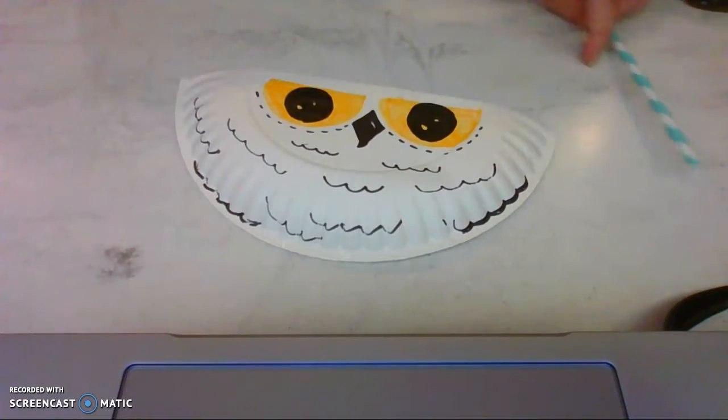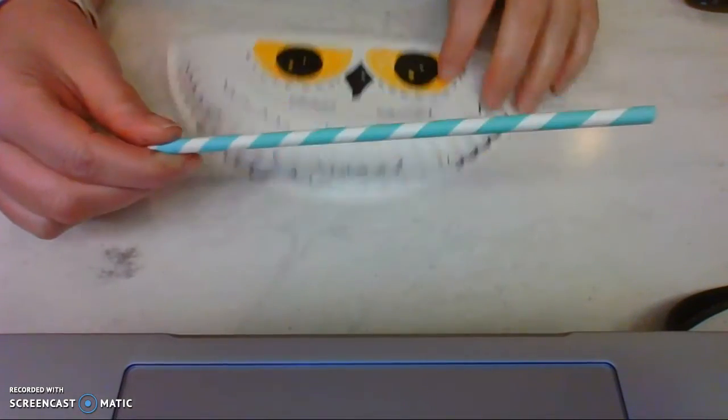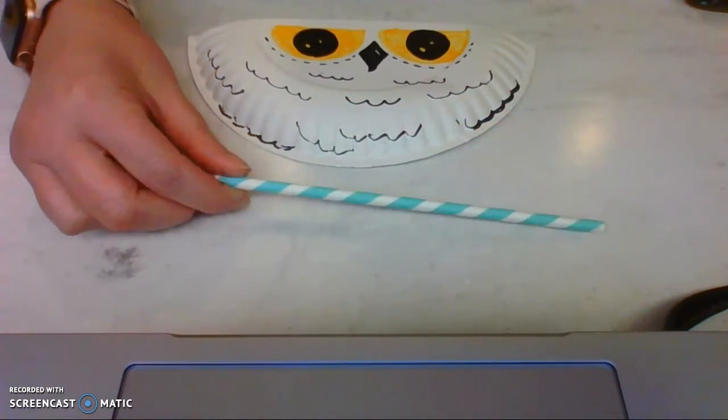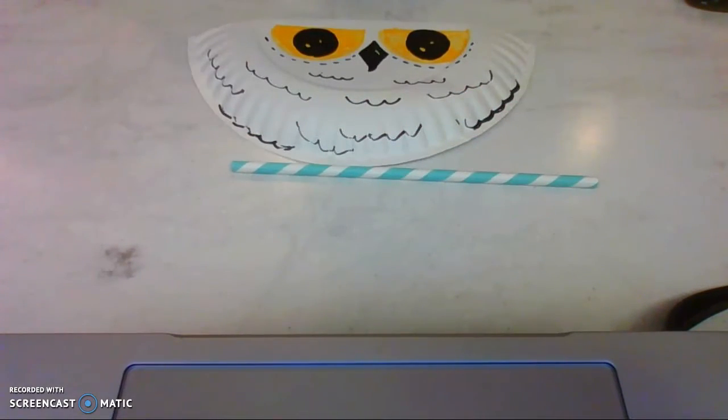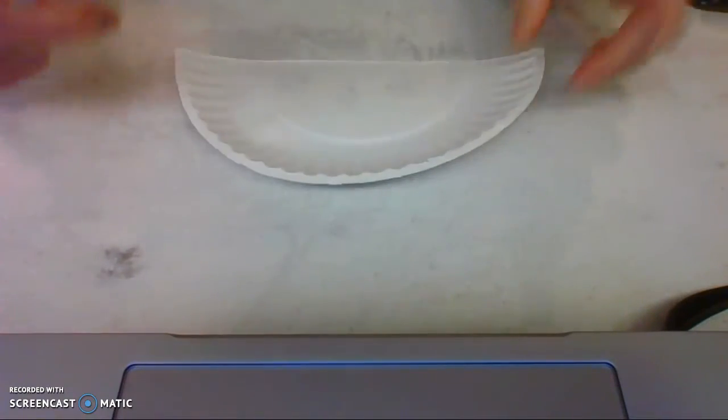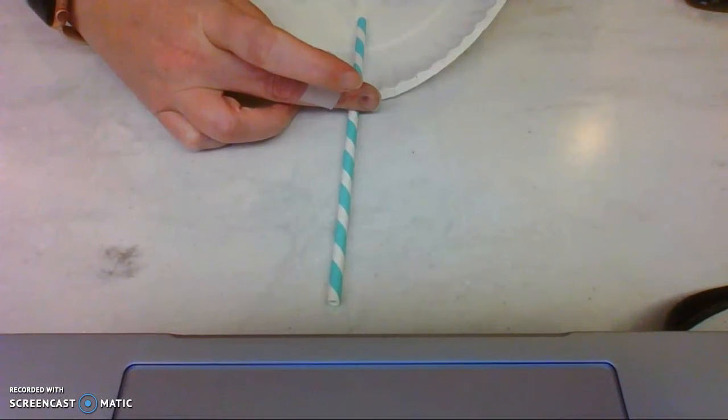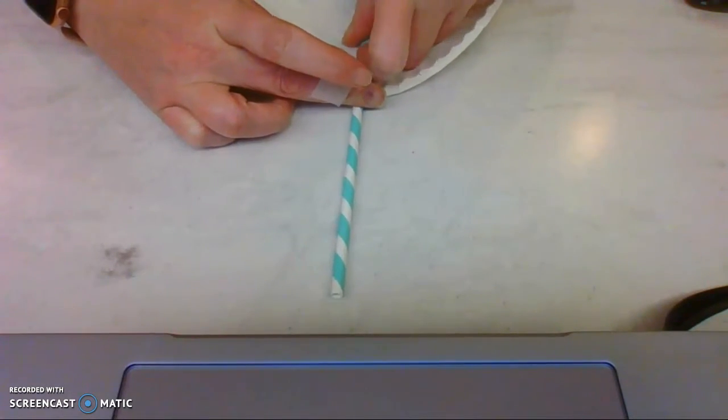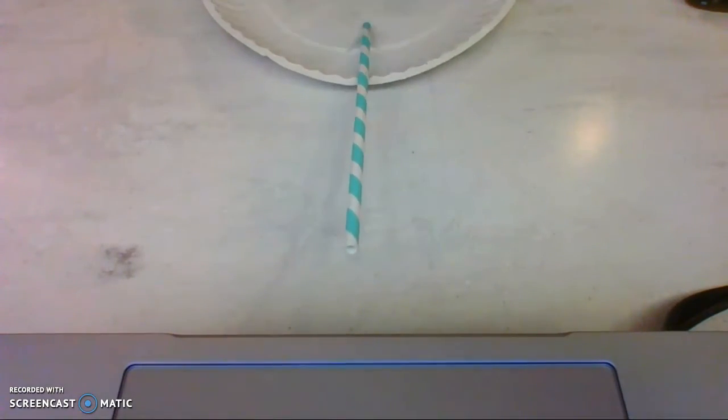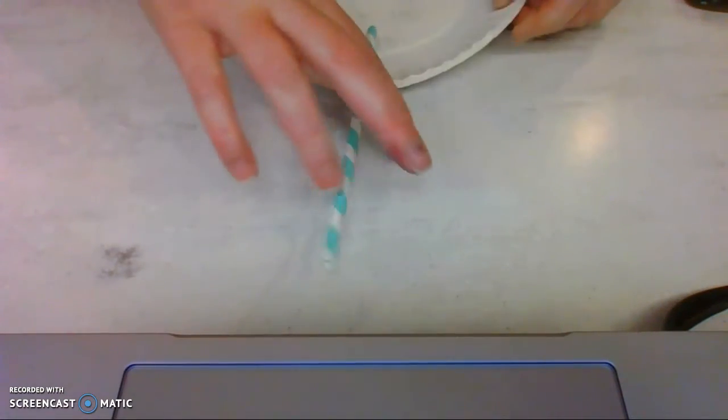Now you're going to take a straw, a popsicle stick, or if you don't have any of those, you could use a stick from outside. That would be fine, and since owls live in trees, it would kind of go along with the owl theme. Then I'm going to turn my plate over, place my holder in the middle, and then tape or glue it down.